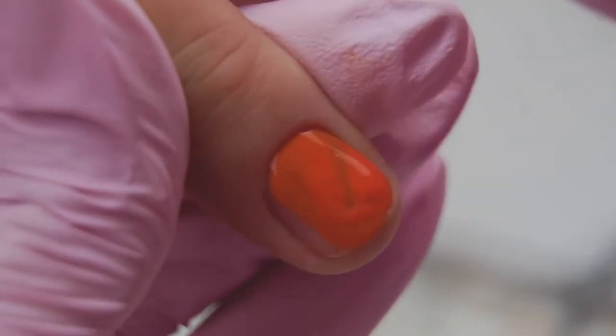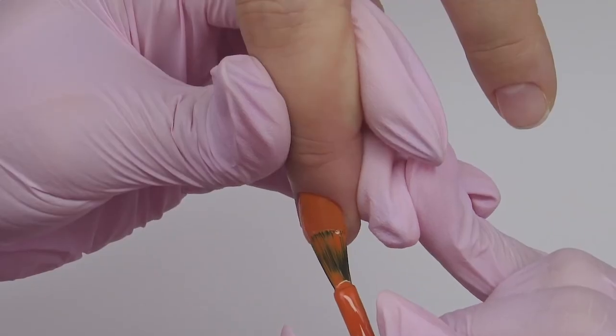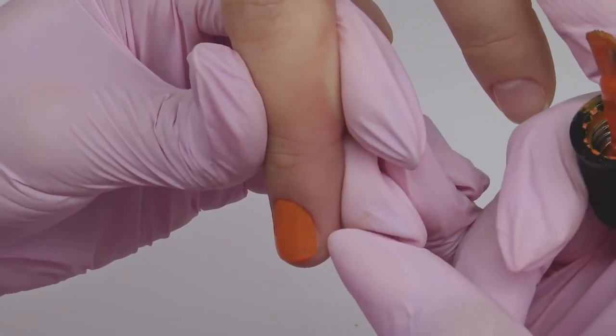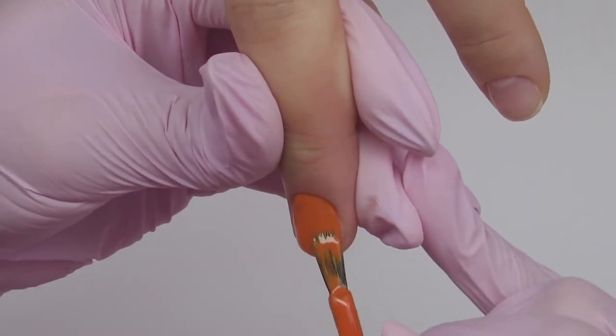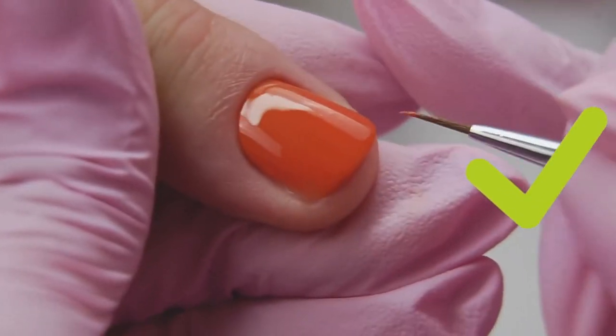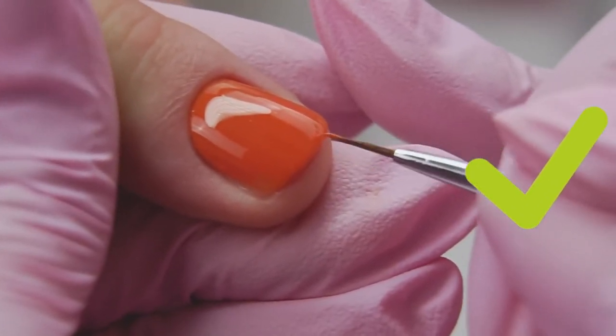I paint the nail plate the same way, and here I don't paint the sides of the nail, so it does not seem too wide. You can remove all the leaks at the free edge with a thin brush.